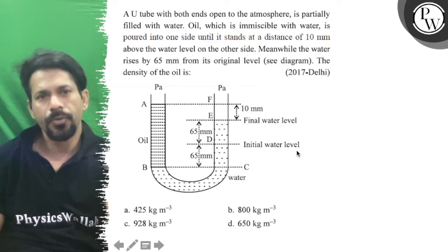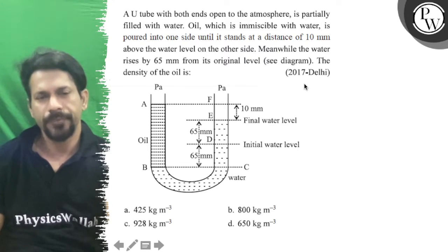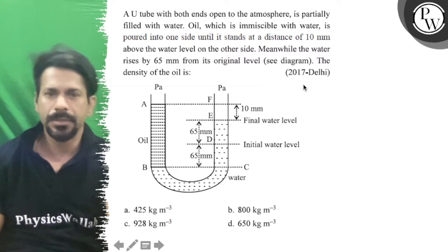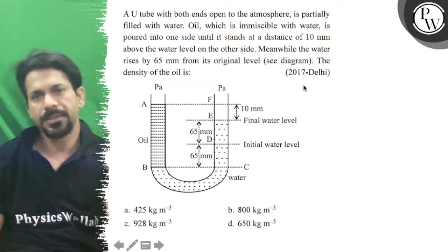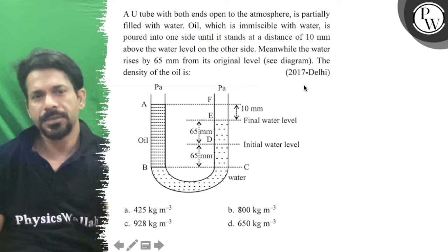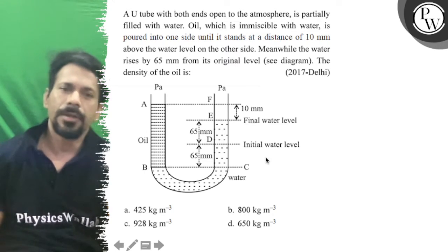Hello, it's the Gishan at YouTube. A U-tube with both ends open to the atmosphere is partially filled with water. Oil, which is immiscible with water, is poured into one side until it stands at a distance of 10 mm above the water level on the other side. Meanwhile, the water rises 65 mm from the original level. Find the density of oil.